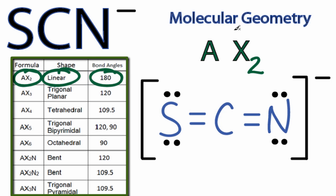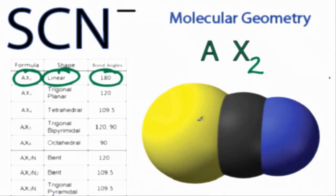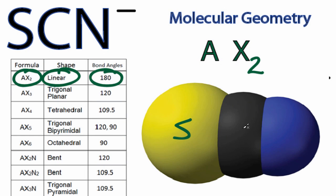So the molecular geometry for SCN minus is linear, and the bond angle is 180 degrees. Looking at it in three dimensions, we have sulfur on one end, carbon in the center, and nitrogen on the other end — all in a straight line, confirming a bond angle of 180 degrees. This is Dr. B with the molecular geometry, or shape, for SCN minus — thanks for watching.